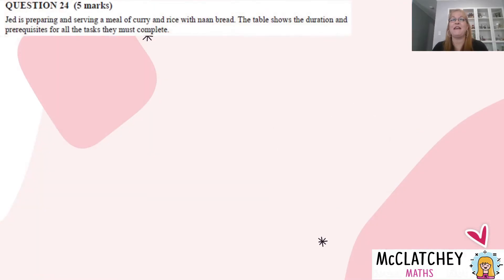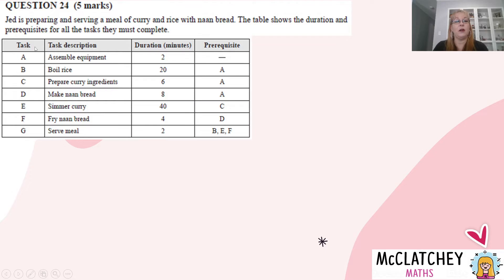Okay, let's get straight into our first question here. It is question 24 with five marks. Jed is preparing and serving a meal of curry and rice with naan bread. The table shows the duration and prerequisites for all the tasks he must complete. So here we go. Here we've got tasks A, B, C, D, E, F, G.